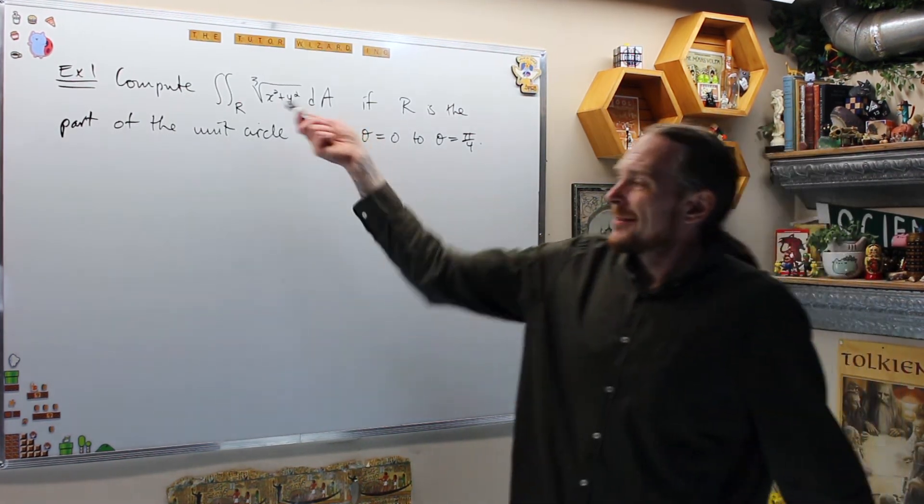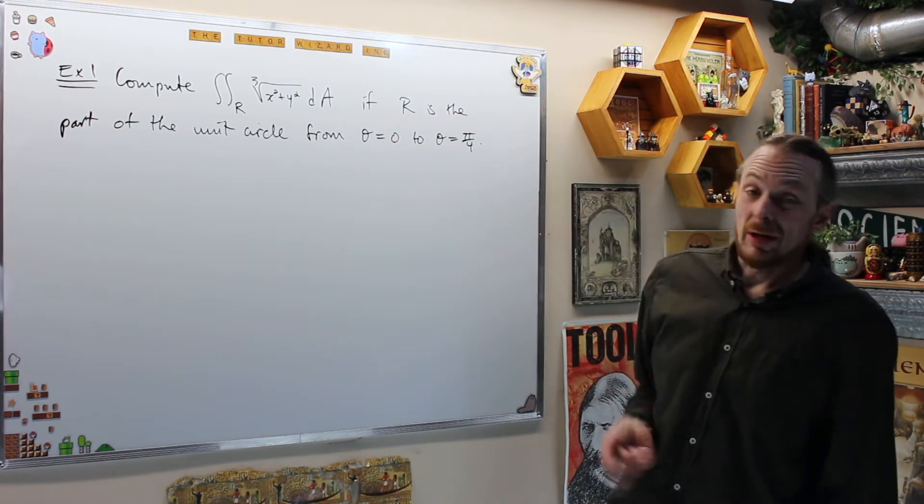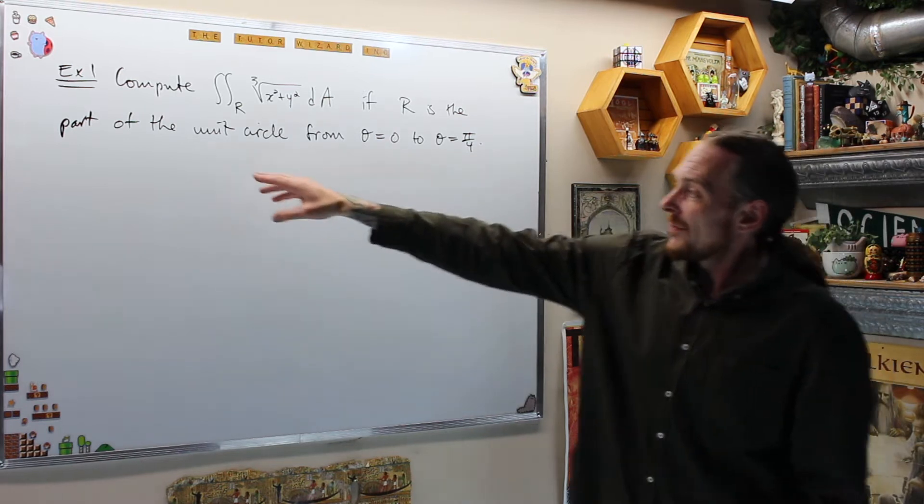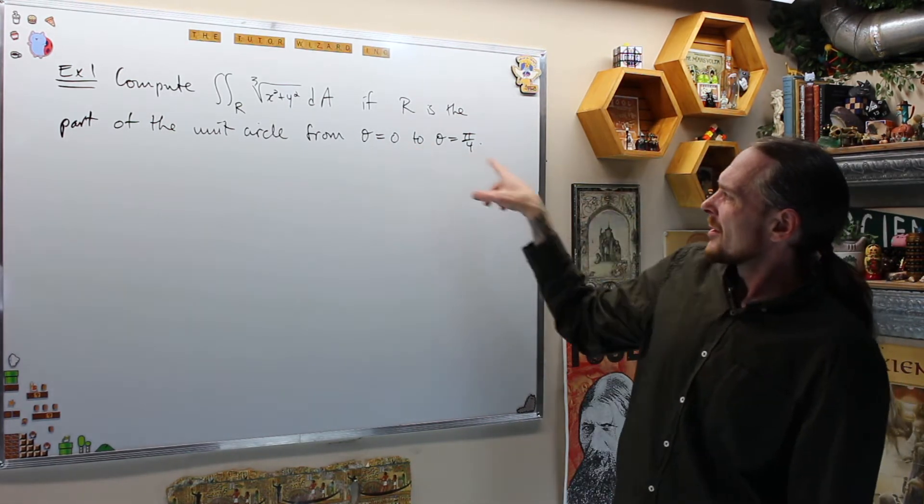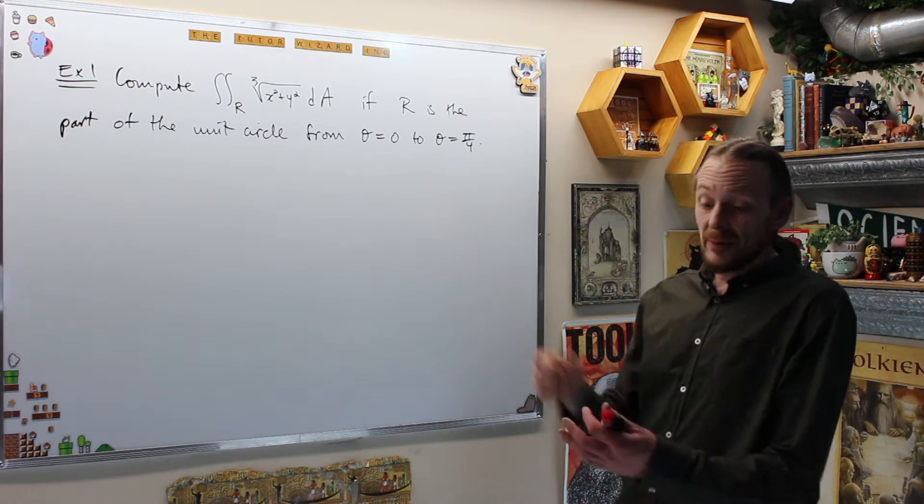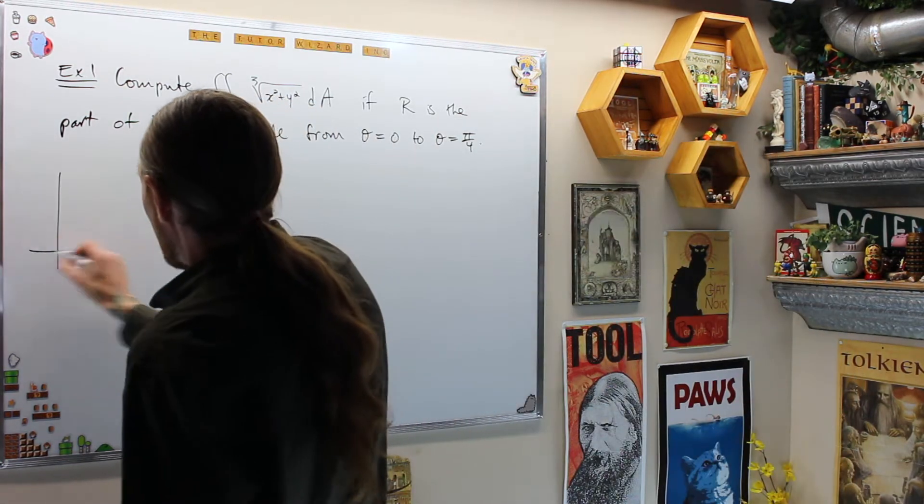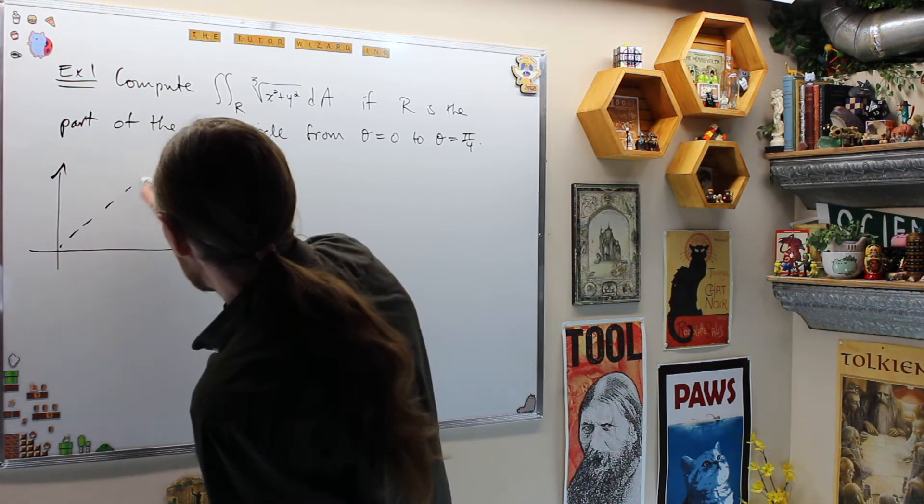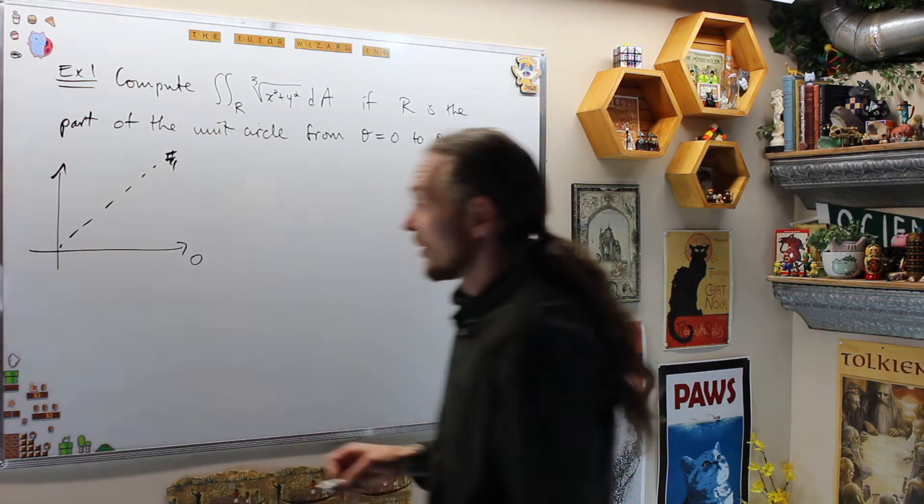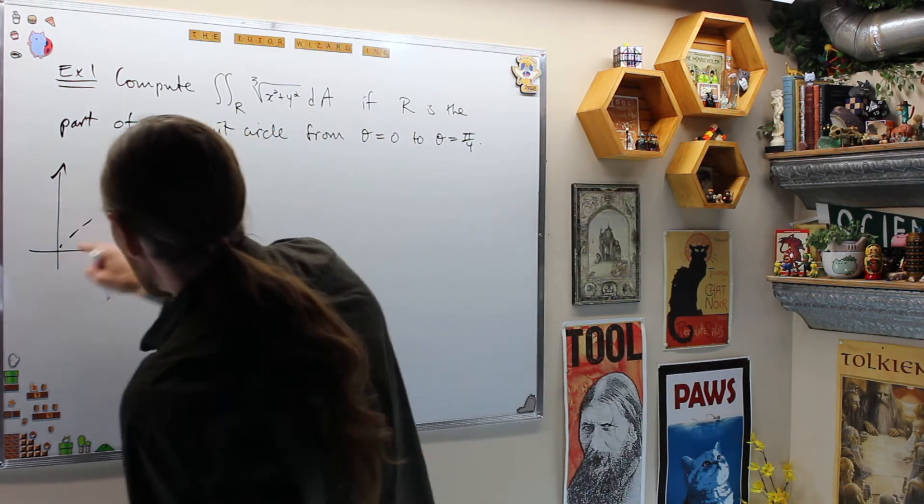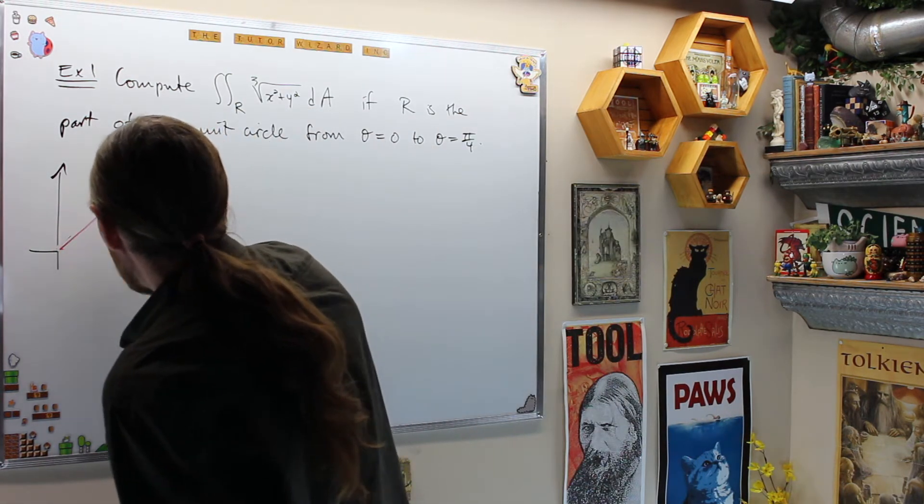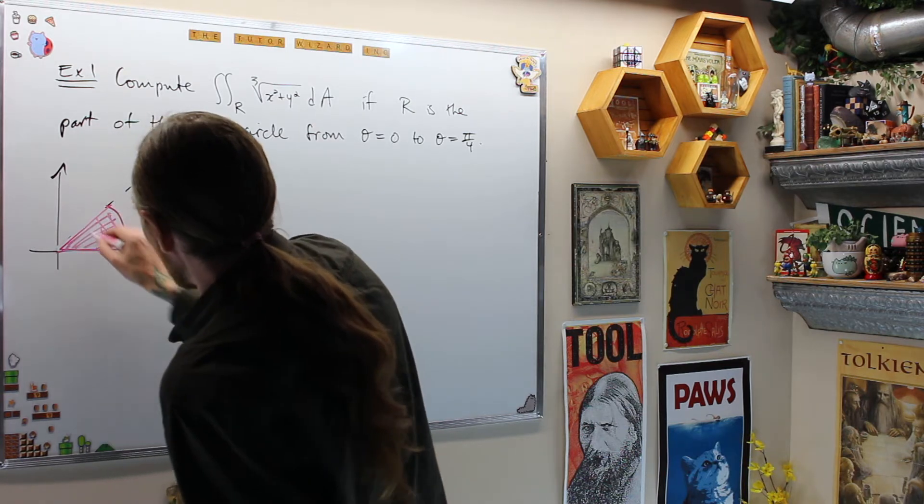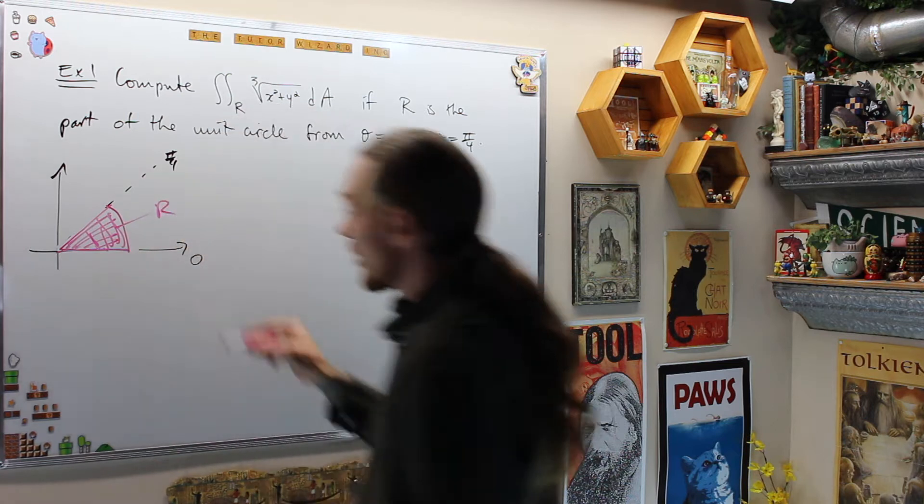Example 1, we're given some nasty integrand again, and we want to compute this double integral if R is part of the unit circle. What is this region? We've got a unit circle. It says the part of the unit circle from theta equals 0 to theta equals pi over 4. This is the first problem. We need to figure out what that looks like. It's going to give us, in the first quadrant, this is 0, and this guy right here is pi over 4. Therefore, that tells me it's on the unit circle, which means I am going to get this region is our region R, which is a polar rectangle.